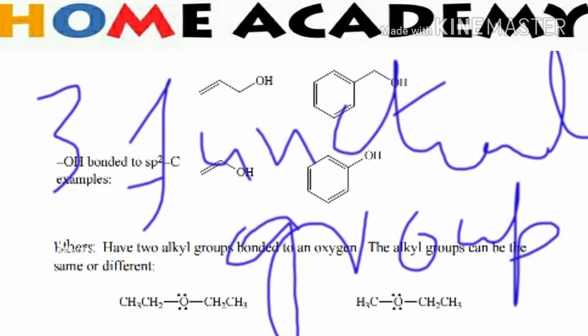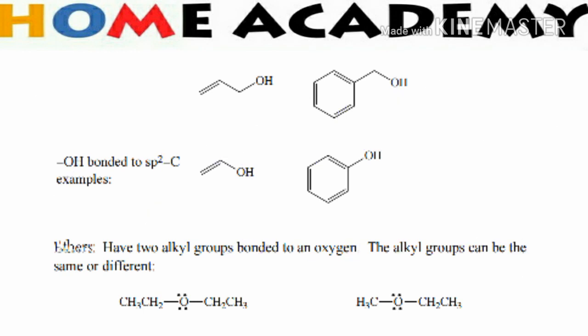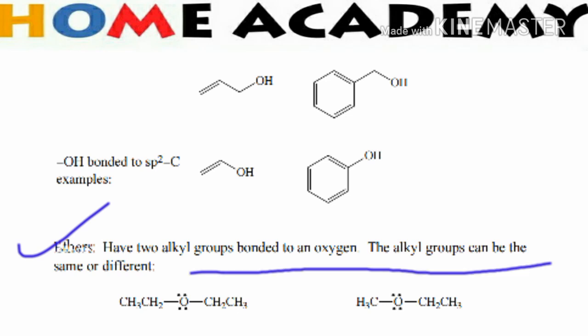Ether contains carbon-oxygen sigma bonds. An ether has two alkyl groups bonded to an oxygen atom. The two alkyl groups can be the same or different.